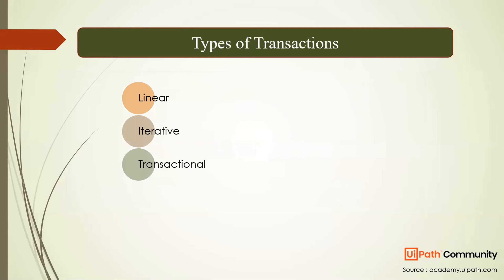When it comes to transactions, there are three types: linear, iterative, and transactional. The RE Framework falls in the third category — transactional — but during your automations you will always have requirements to work in linear, iterative, or transactional mode. That is why it is important to understand the difference between the three.